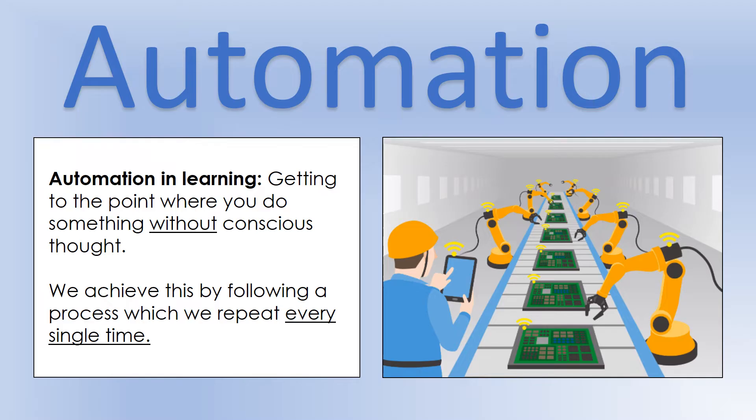What I'm trying to do is get certain processes we use in physics all the time to the point where we can do them without any conscious thought — we've got a routine that we've used over and over again, and we can just do it without even thinking. The way we're going to achieve that is by having a step-by-step process that we use for unit conversion every single time, and by using it repeatedly over a period of time, we will essentially automate that process.